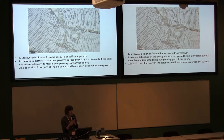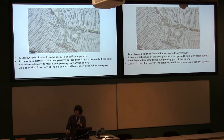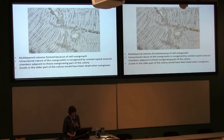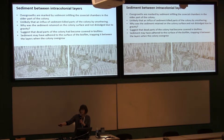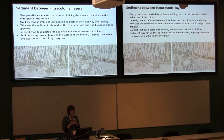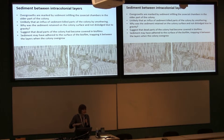The zooids in the older parts of the colony would have died when they were overgrown — you don't generally get colonies overgrowing live cells. Parts of the colony would have died and then, to retain this domic form, the colony would have overgrown itself. The overgrowths are marked by sediment infilling the zoecia tubes in the older parts of the colony. You can see sediment in the tops of the older zoecia tubes, then overgrown by the newer part of the colony.